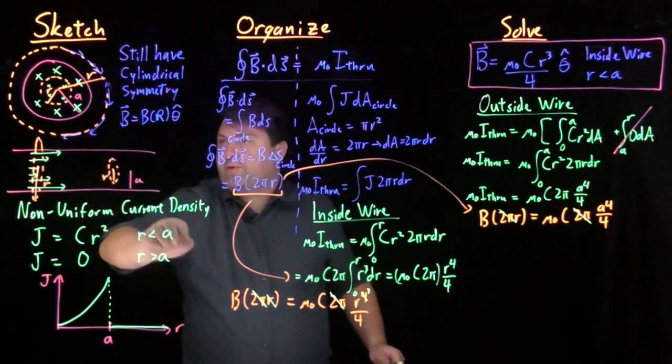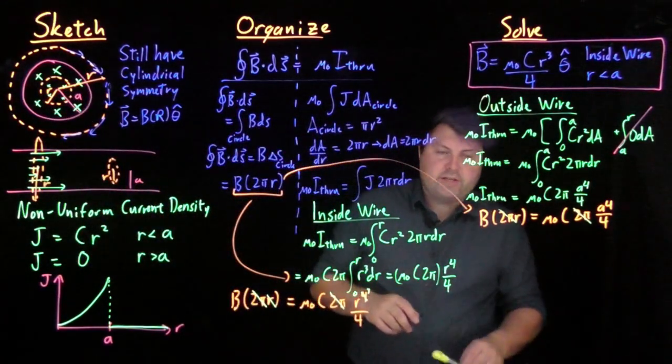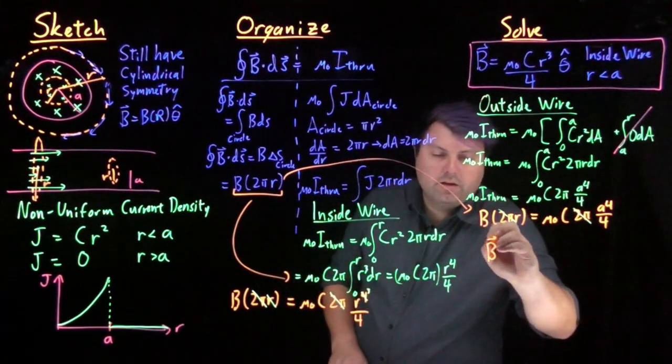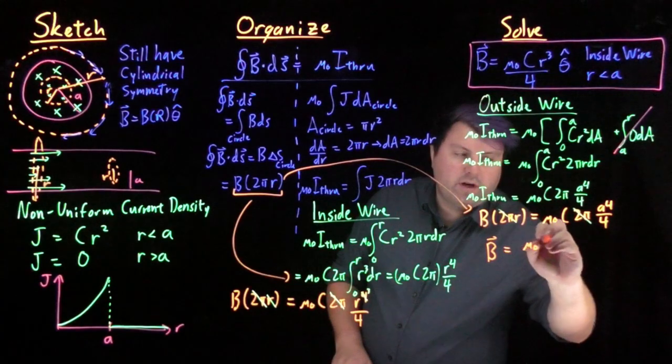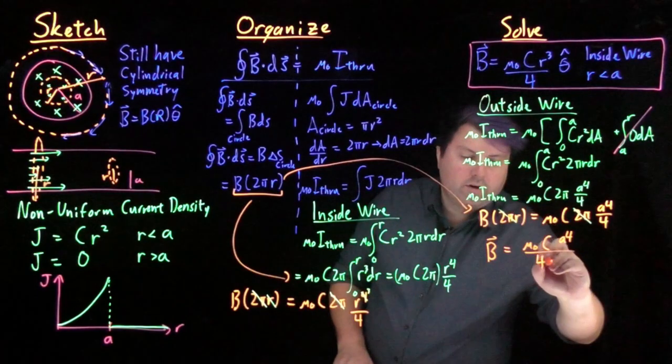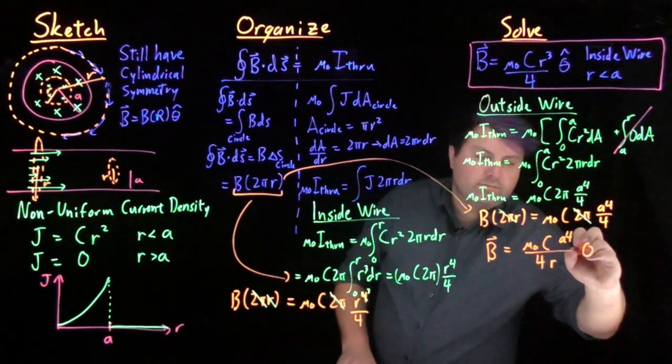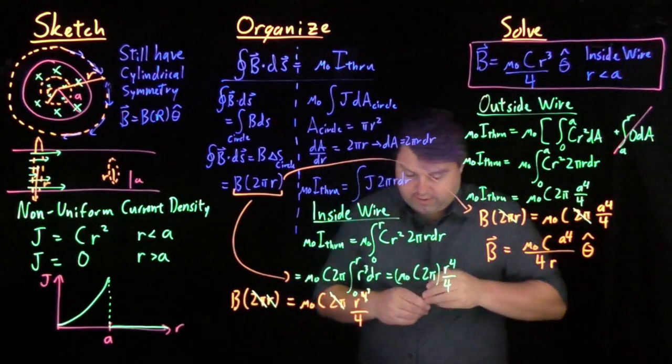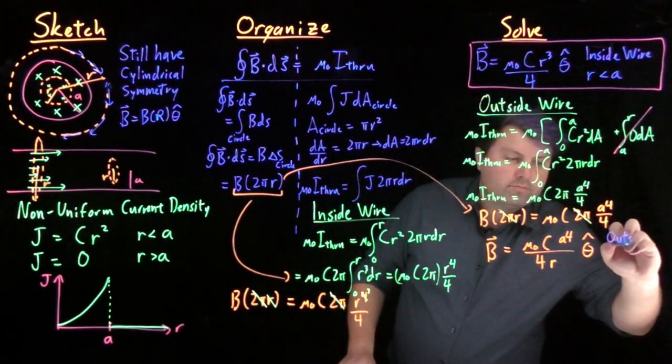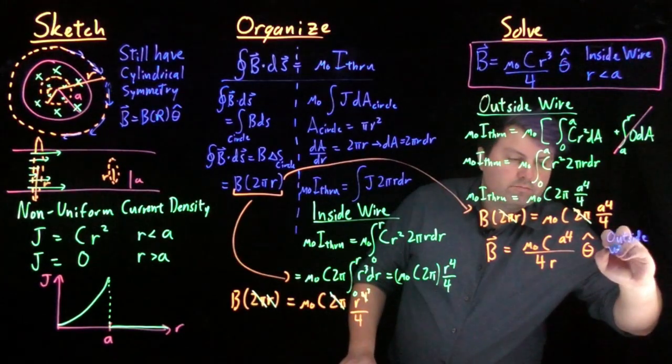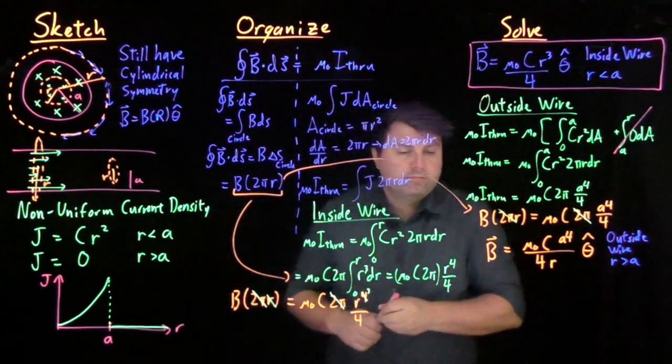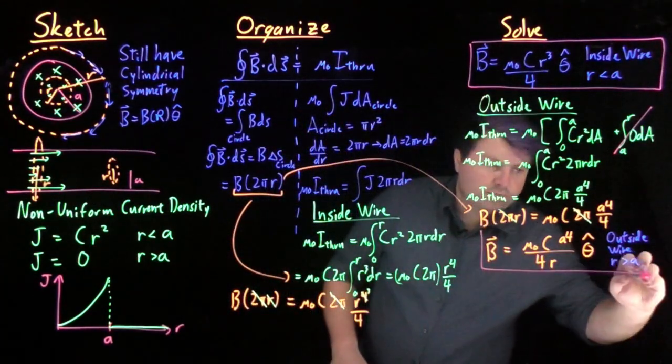So we get that our b is equal to mu naught c a to the 4th over 4 r. And we know theta hat, and this is for outside the wire, for r greater than a.